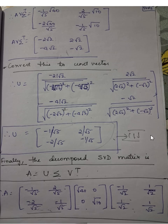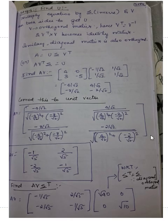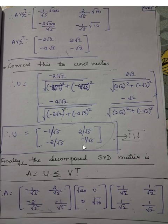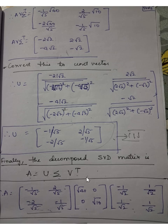So you have completed the decomposition. This gives you three matrices: V (eigenvectors), sigma (diagonal matrix with √40 and √10 on root entries), and U. Finally, matrix A is decomposed into U times sigma times V transpose. That is your SVD decomposition.